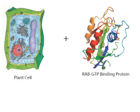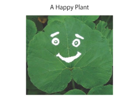As you can see, RAB-GTP binding proteins are essential in the cell. Without these proteins, the endomembrane system would not function properly and secretion from the cell would be a challenging task.